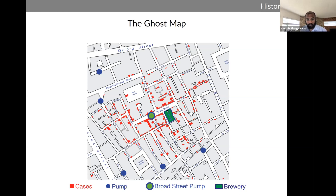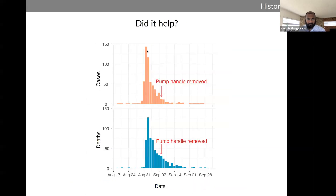Interestingly, there was a brewery nearby where no cases of cholera were recorded — workers at the brewery were offered a daily ration of beer, so they just drank the beer, which actually saved their lives. Once Snow noticed this, he petitioned the local council and they had the handle removed. The pump handle was removed as the outbreak was already waning, so it is debatable how much it did to curb spread. Regardless, this is the first recorded public health intervention based on spatial epidemiology.